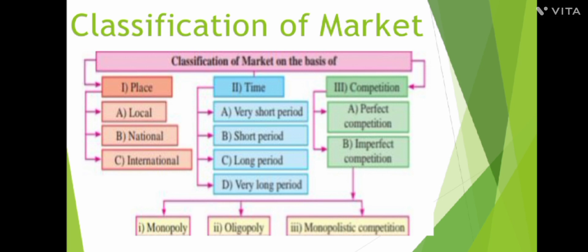First is on the basis of place: local market, national market, and international market. Local means within a local area. National market means within the country. International market means outside the boundaries of India — if trade crosses national borders, we call it international market.